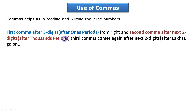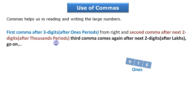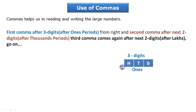After putting the second comma, leave two digits and put the third comma — that is after the lakhs period. Always put commas from the right side. Here in the diagram: the first comma is after three digits, that is after the ones period.